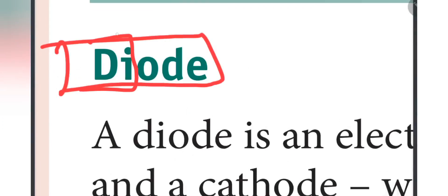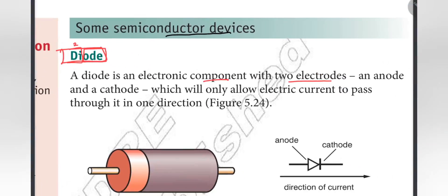A diode is an electronic component with two electrodes - an anode and a cathode - which will only allow electric current to pass through it in one direction.